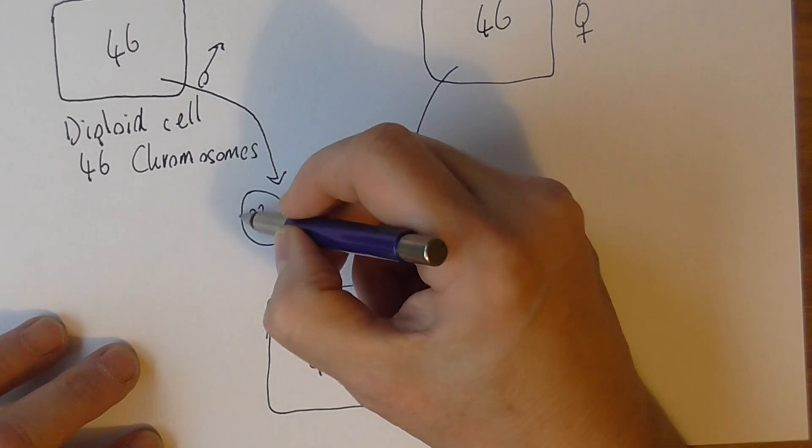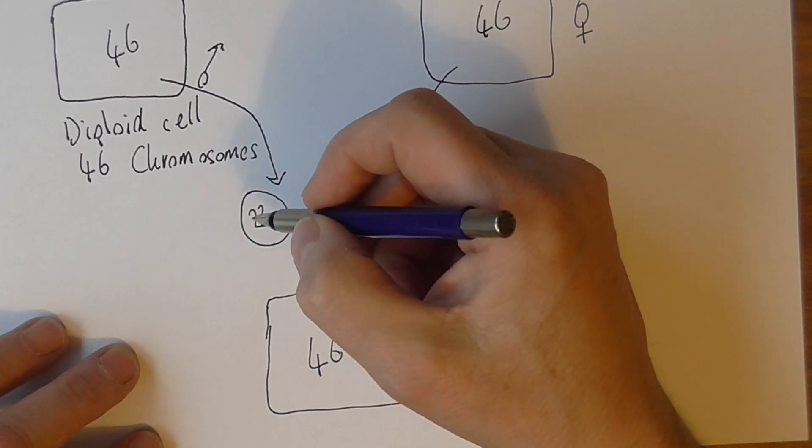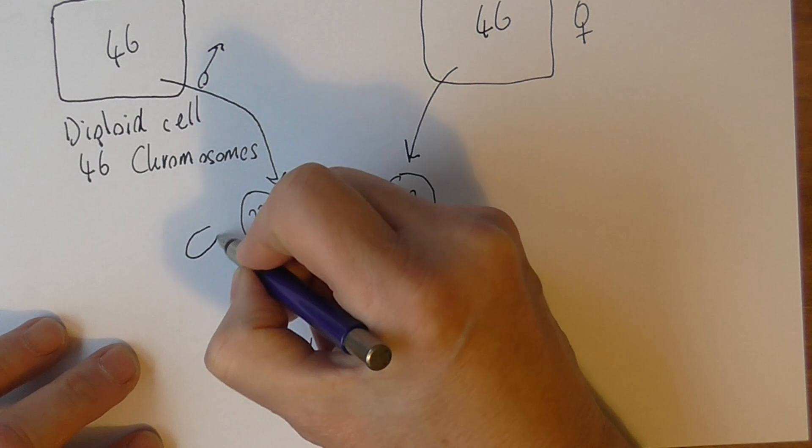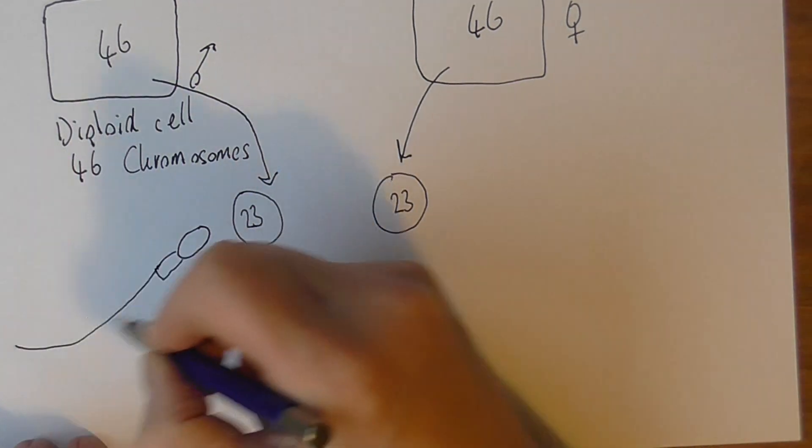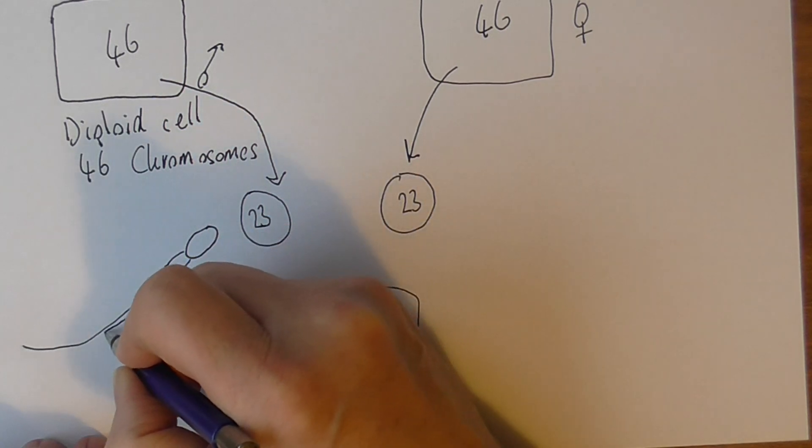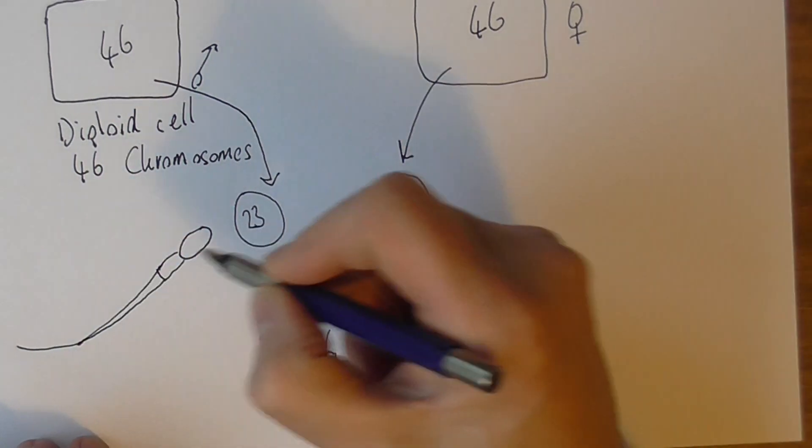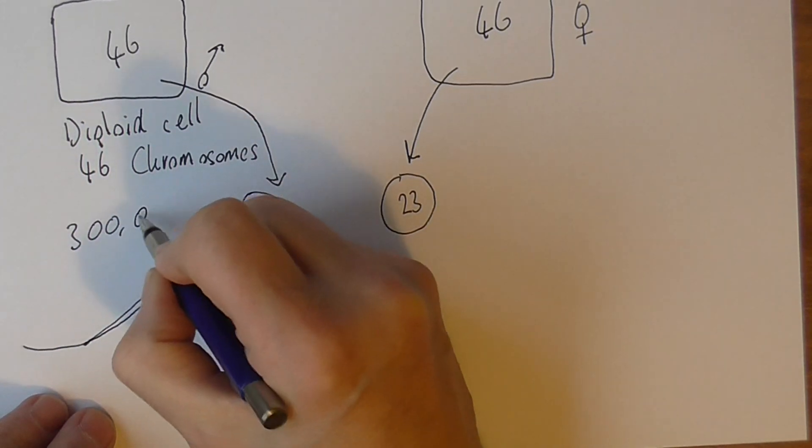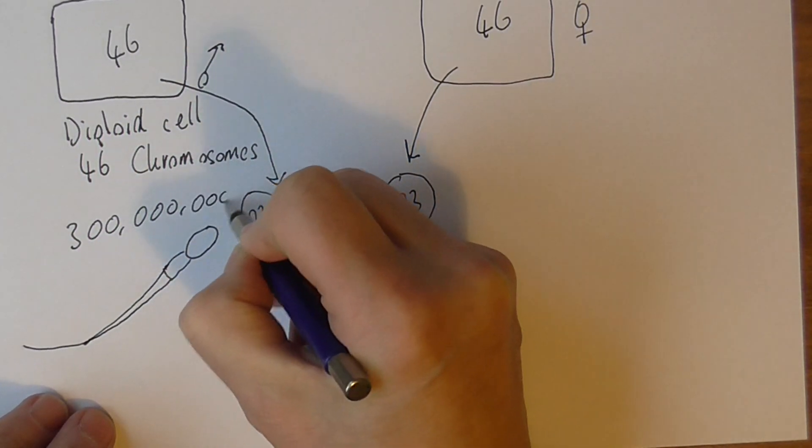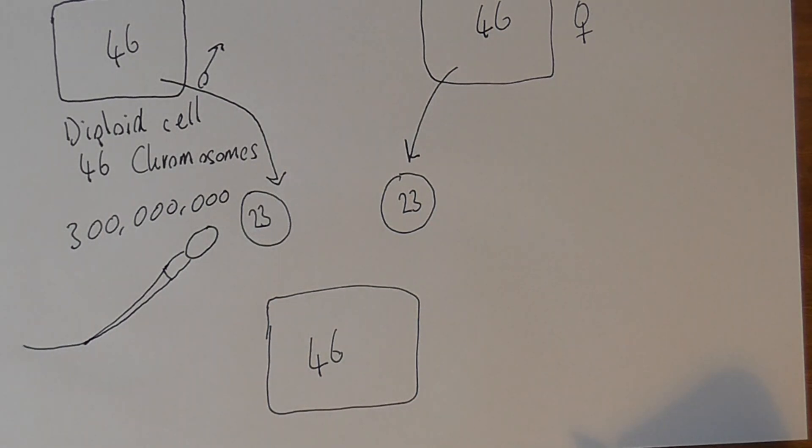This one, because it's male, is going to be a sperm cell that's going to have a head and neck and tail. It's amazing - men can produce, let me write this down, 300 million of these per day, quite staggering.